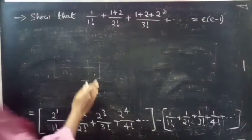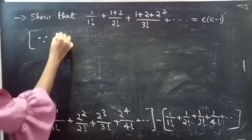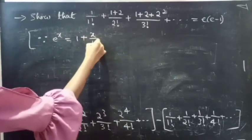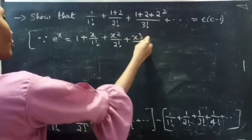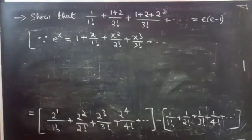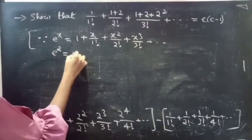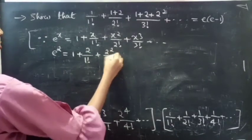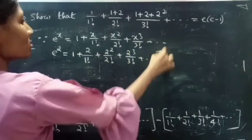Since e power x equals to 1 plus x by 1 factorial plus x squared by 2 factorial plus x cubed by 3 factorial plus so on, if you substitute x equals to 2 you get e squared equals 1 plus 2 by 1 factorial plus 2 squared by 2 factorial plus 2 cubed by 3 factorial plus so on.